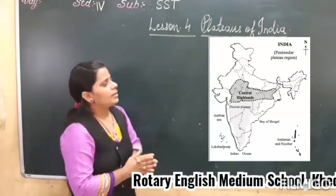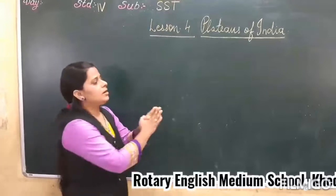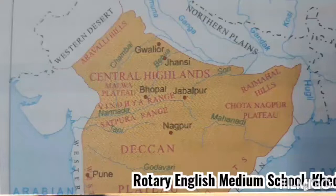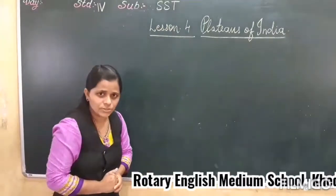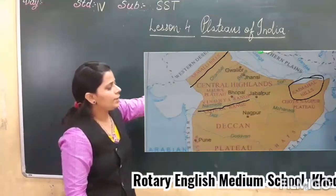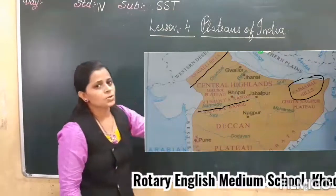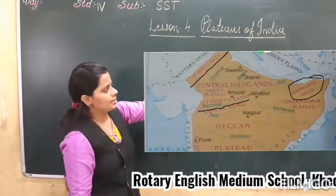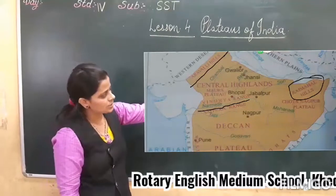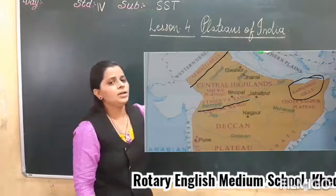Central Highlands. First we will see the location. The Central Highlands lie to the north of Narmada River. As I told you, Narmada River divides the plateau into 2 parts. To the north of Narmada River, there is the Central Highland. The Central Highlands are surrounded by many hills: Aravali Hills in the north west, Vindhya Range in the south, and Rajmahal Hills in the north east.